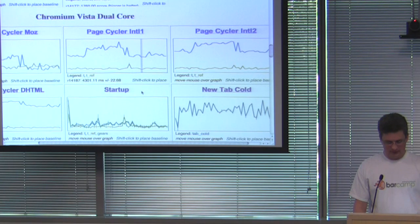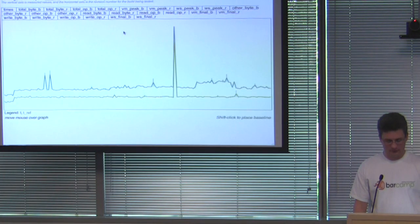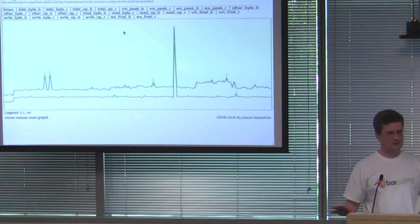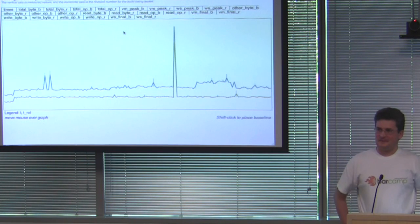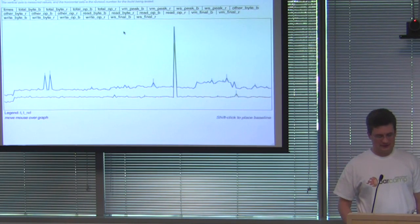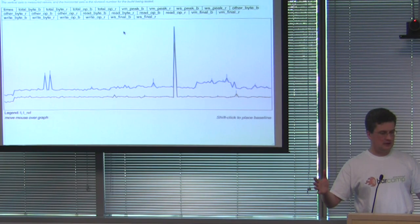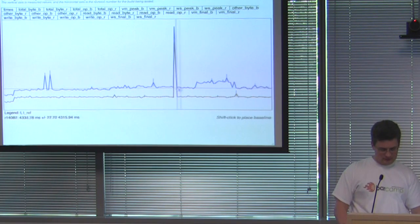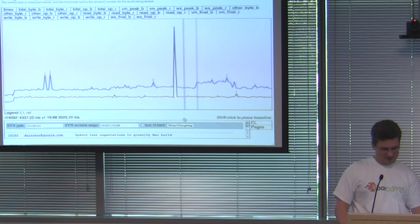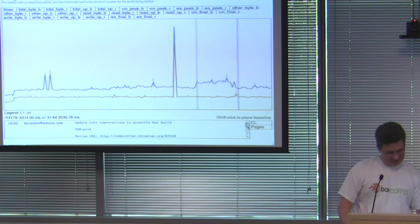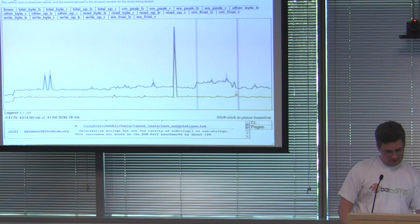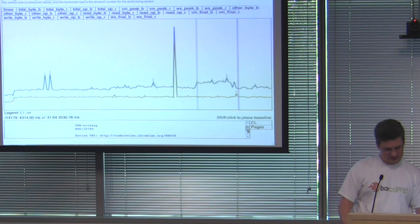PageCyclers are really cool — essentially a bunch of HTML pages we run in succession, tracking time, memory, virtual bytes used, and things like this. It allows us to quickly measure if something has changed. If there's a regression, we go look at the specific revision. For example, here's a regression right here — let's see what changed it. Externalized strings — something you have to investigate.